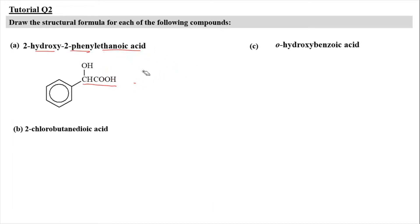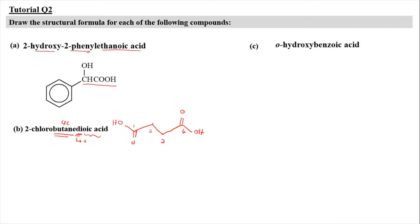Next, we have 2-chlorobutanedioic acid. The prefix 'di' refers to 2 carboxyl groups, and it has 4 carbons: 1, 2, 3, and 4. At each end of the carbon chain, we attach a carboxyl group. Numbering: 1, 2, 3, 4. At carbon number 2, it's attached with chlorine. So it's 2-chlorobutanedioic acid. You can draw it in different zigzag orientations but it is still the same answer.